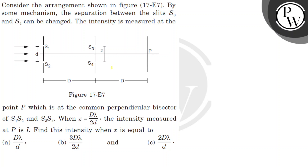Let's read this question. The question is given in this figure. By some mechanism, the separation between the slits S3 and S4 can be changed. This separation is Z, and it is variable. The intensity measured at point P, which is at the common perpendicular bisector of S1, S2. When Z equals Dλ/2d, the intensity measured at P is I. We need to find the intensity when Z equals three given values.